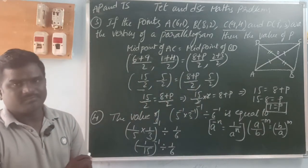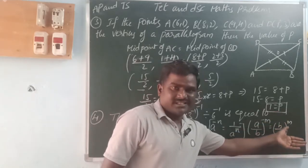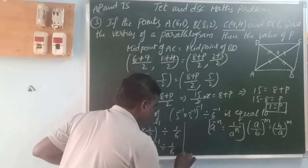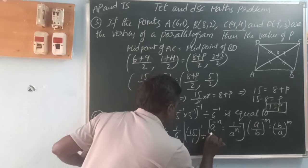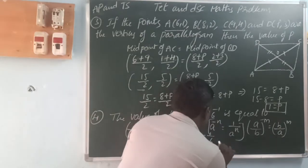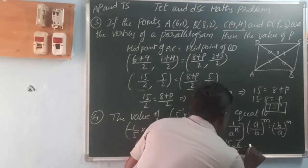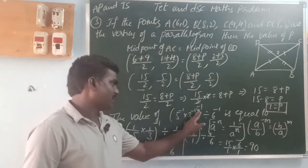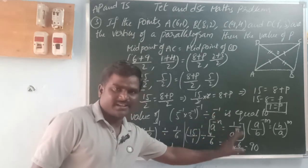Since the base is a fraction and the power is negative, we take the reciprocal. So (1 by 15) whole power minus 1 becomes 15 by 1 equals 15. Then 15 divided by (1 by 6) equals 15 into 6 equals 90. So the value of (5 power minus 1 into 3 power minus 1) whole power minus 1 divided by 6 power minus 1 is equal to 90.